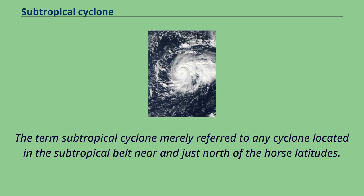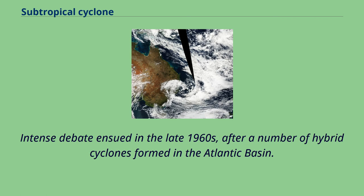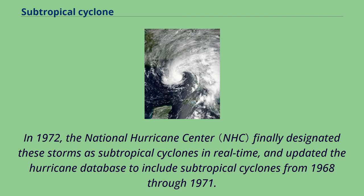The term subtropical cyclone merely referred to any cyclone located in the subtropical belt near and just north of the horse latitudes. Intense debate ensued in the late 1960s after a number of hybrid cyclones formed in the Atlantic basin. In 1972, the National Hurricane Center finally designated these storms as subtropical cyclones in real time, and updated the hurricane database to include subtropical cyclones from 1968 through 1971.